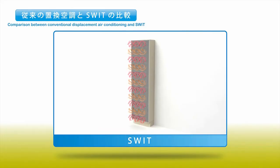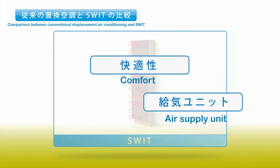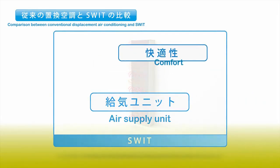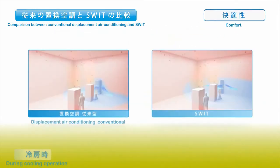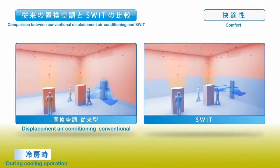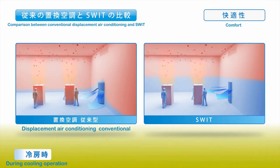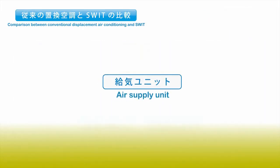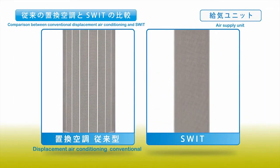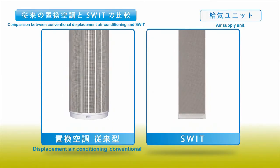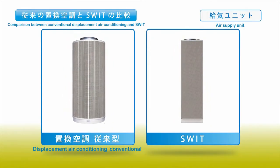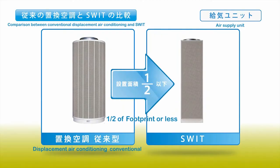Let's take a closer look at the comfort of SWIT and its air supply unit. In terms of comfort, compared to conventional air conditioning, the airflow area is increased with SWIT, preventing uncomfortable cold air in the lower levels and pollutants from accumulating. Regarding the air supply unit, SWIT makes quick air outlets possible and achieves space saving by reducing the surface area to one-third and footprint to one-half or less.